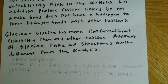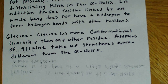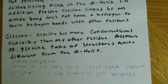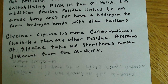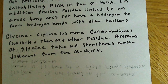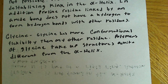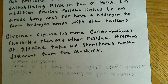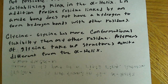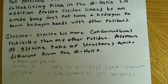The other residue that you might encounter that will have some problems is glycine. Glycine has more conformational flexibility than any other residue, and polymers of glycine take up structures quite different from that of the alpha helix. Glycine is really small — it only has a hydrogen as its side chain, not any sort of elaborate side chain, just a single hydrogen. It's achiral because of that hydrogen; it doesn't have four different groups attached to it, giving it a lot more flexibility to assume many different types of conformations.